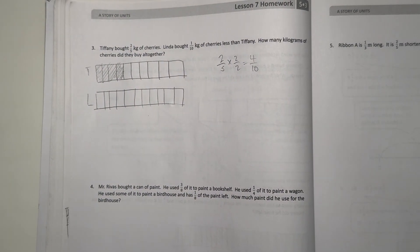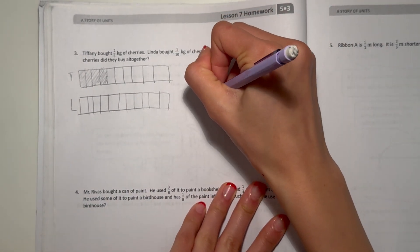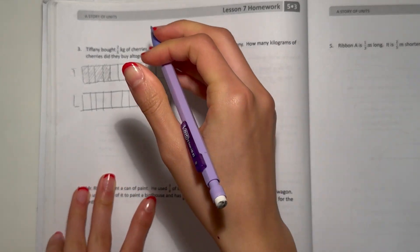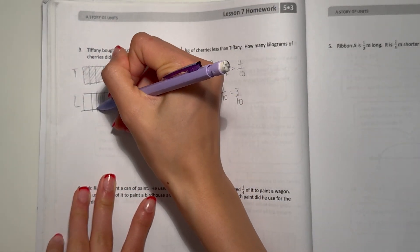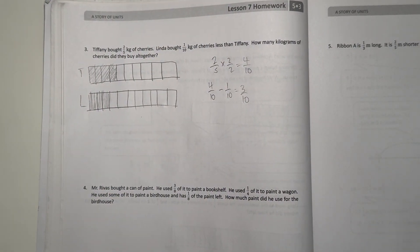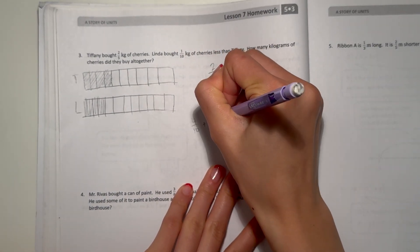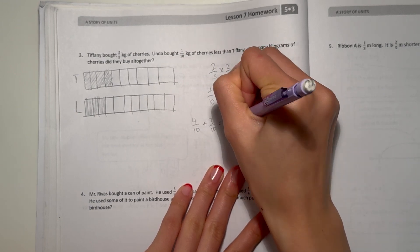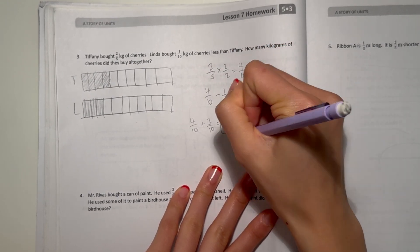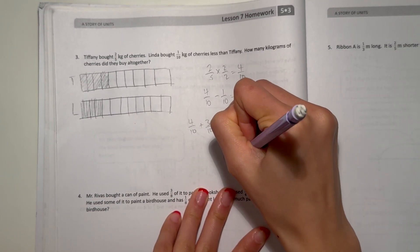She picked one-tenth of a kilogram of cherries less than Tiffany. So, Tiffany picked four-tenths, and four-tenths minus one-tenth is three-tenths. So that means Linda picked three-tenths. But we're not done yet. It's asking how many kilograms of cherries did they buy altogether? So, we have four-tenths plus three-tenths. Four plus three is seven. So our answer is seven-tenths kilograms of cherries altogether.